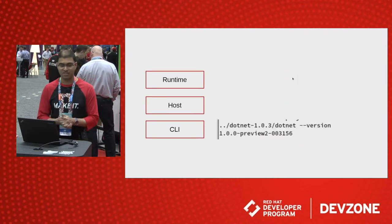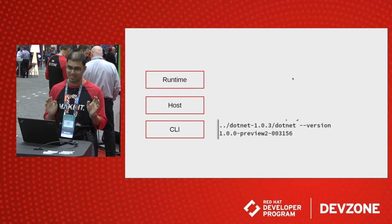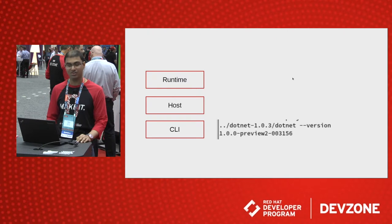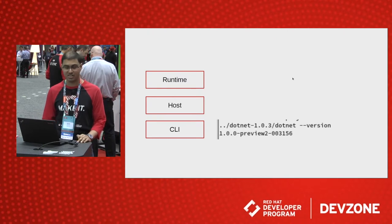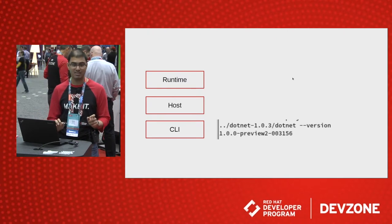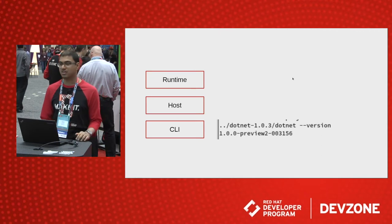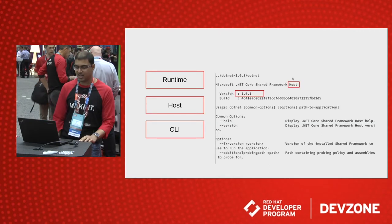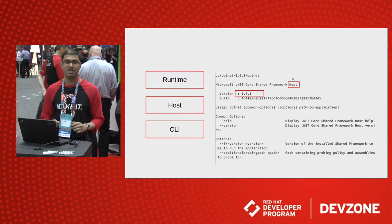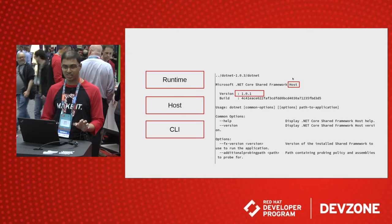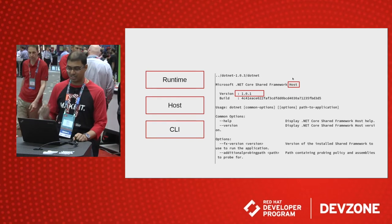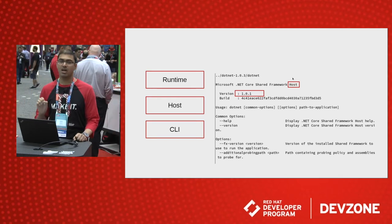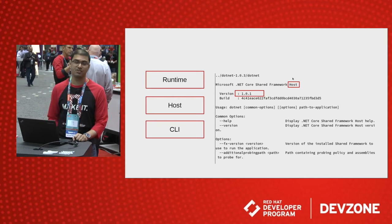And how do you find out the version of each of these? Well, this is where it gets really, really fun. For CLI, you actually do `dotnet --version` and it tells you the version of the CLI — not the host, not the runtime. Host is next — it's actually pretty easy. You just run `dotnet` by itself. It literally says '.NET Core Shared Framework Host' and it gives you the version of the host.